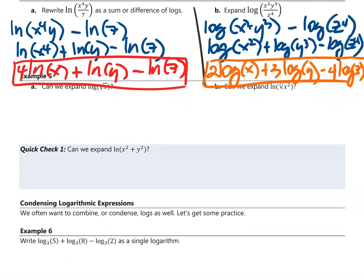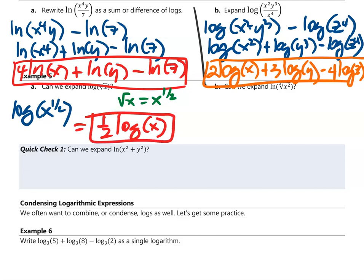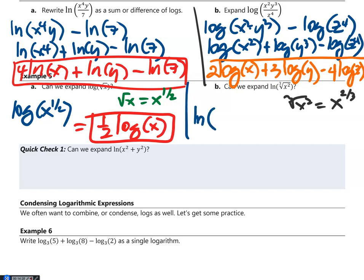Can we expand log of the square root of x? Yes — the square root of x is x raised to one half, so log of x^(1/2) equals one half log of x. Can we expand ln of the cube root of x²? The cube root of x² is x raised to two-thirds, so ln of x^(2/3) equals two-thirds ln of x.